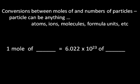One mole of anything equals 6.022 times 10 to the 23rd of that anything, because that's the definition of a mole. So for example, one mole of electrons would be the same as 6.022 times 10 to the 23rd electrons. Or one mole of sodium atoms would be the same as 6.022 times 10 to the 23rd sodium atoms.